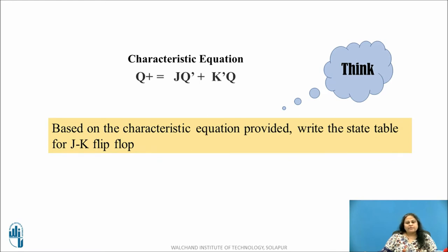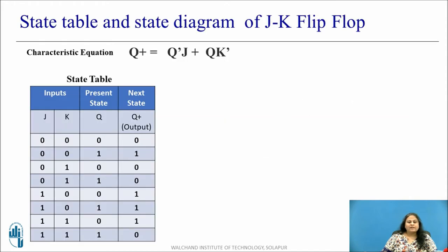Pause this video and based on the characteristic equation try to write the state table for the JK flip-flop. The state table is as shown. Based on the inputs J, K and present state Q, the next state Q+ is obtained using the characteristic equation. As J, K and Q are 3 variables, a total of 8 combinations are obtained.